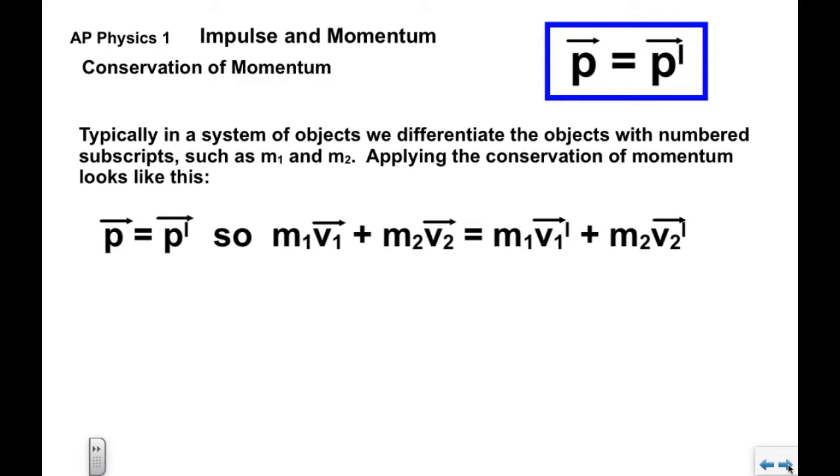So now when we look at a system of objects, we typically differentiate the objects with the number subscript m1 and m2. When we apply conservation of momentum, let's say we have two objects in the system: p equals p prime. So we have the left side of the equation indicates the momentum of the system before. We can see that m1 has its own momentum vector, m2 has its own momentum vector before the interaction takes place, and then m1 has its momentum vector after and m2 has its momentum vector after. Notice the prime notation to indicate after.